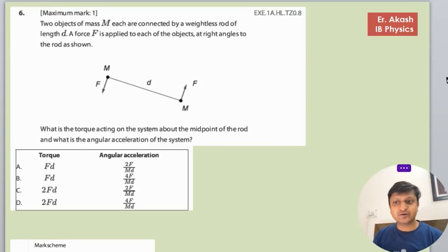So there's another question. The question says that two objects of mass m each are connected by a weightless rod of length d. A force F is applied to each of the objects at right angles to the rod as shown. So there is a rod of length d, two masses m, and both are acted upon by force F.